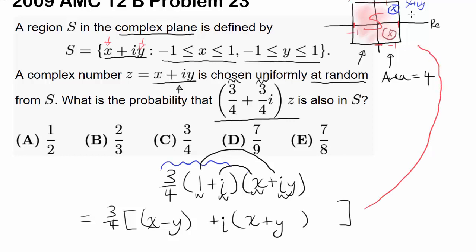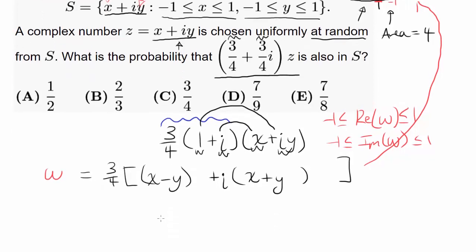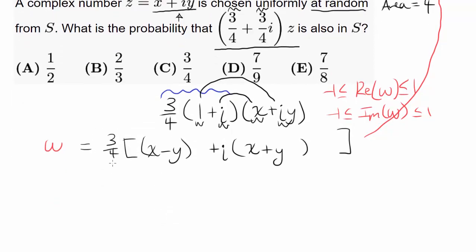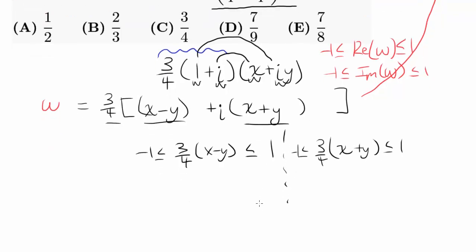Since we want this complex number w to be in S, we need the real part (3/4)(x minus y) to satisfy negative 1 ≤ (3/4)(x − y) ≤ 1, and the imaginary part (3/4)(x plus y) to satisfy negative 1 ≤ (3/4)(x + y) ≤ 1.